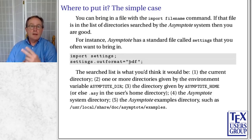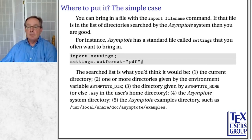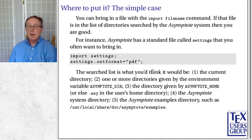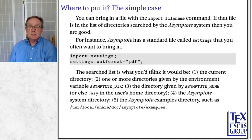So I have this one file that works across all my Asymptote files. Where to put it? There are two cases: simple and not so simple. You can bring in a file with import filename — just what you'd think. If that file's in the list of directories searched by the Asymptote system, you're home free. Asymptote has a standard file called settings that you often want to bring in: import settings, and maybe set the output format to PDF. Asymptote searches first in the current directory, then in the environment variable ASYMPTOTE_DIR, then in the directory given by ASYMPTOTE_HOME, and so on.